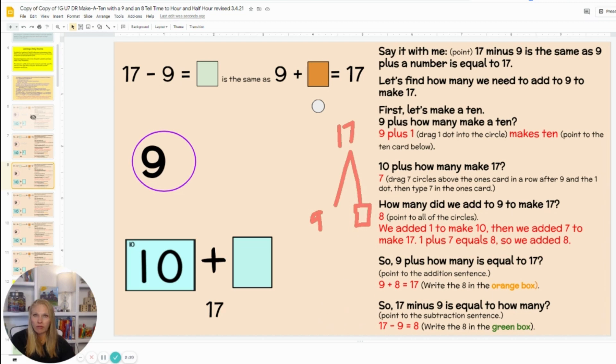Let's count on from 9 to find 17. 9 and how many make a 10? 1. You're right. Now we've made a 10. How many goes with 10 to make 17? Class, 7. You're right. 10 and 7 make 17.